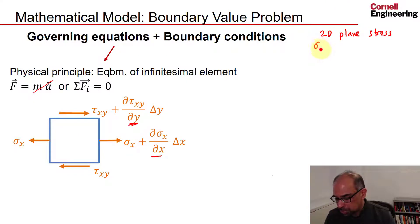So all stresses in the z direction—sigma z, tau xz, and tau yz—are zero. I don't need to worry about equilibrium in the z direction. That's automatically satisfied.